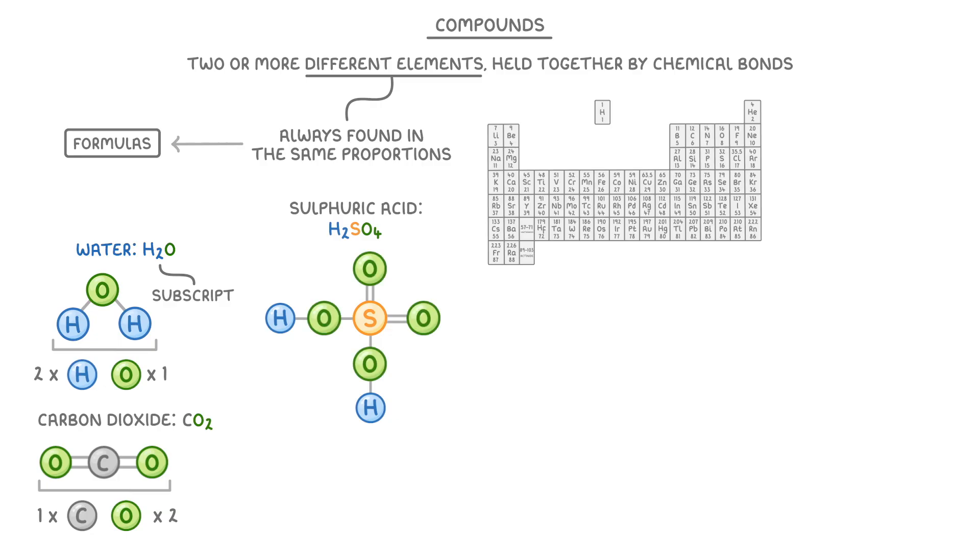Although you wouldn't be expected to know that they fit together like this, we're just doing it to show you how it works. Sometimes you might also see brackets in formulas, such as in calcium hydroxide. Just like in maths, the brackets effectively group together everything inside them. And then the number on the outside of the brackets tells us how many of those groups there'll be. So in this case, there's one calcium atom and two groups of OH.